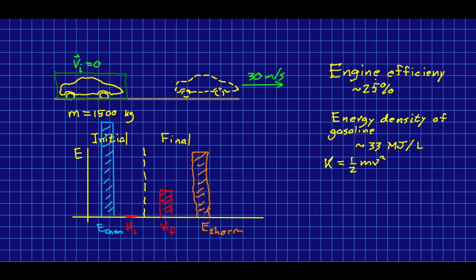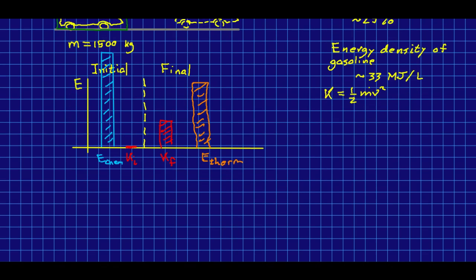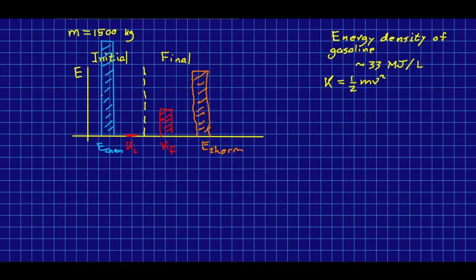And we can now write a conservation of energy equation. In fact, the energy bar chart has practically already done it for us. If we interpret this line here that's indicating the break between initial and final as where we should put our equals, because we're saying this is a closed system, and so our initial energy should equal our final. All we have is some e-chem initially. I'm going to ignore that zero kinetic energy at the start, which becomes final kinetic energy and thermal energy at the end.